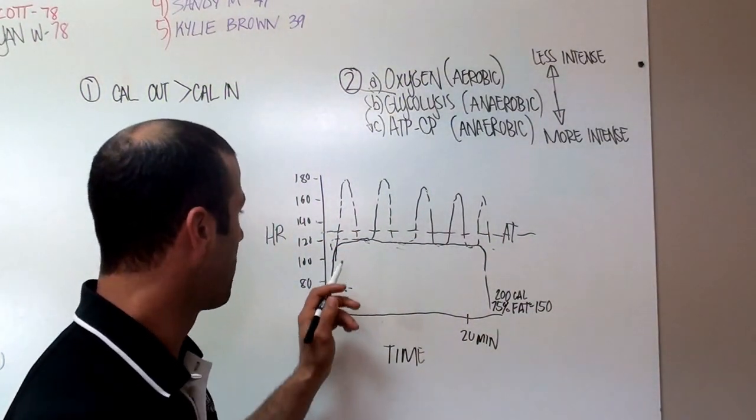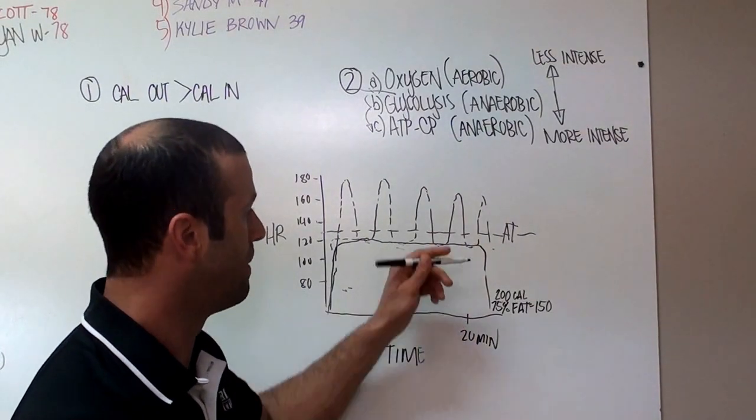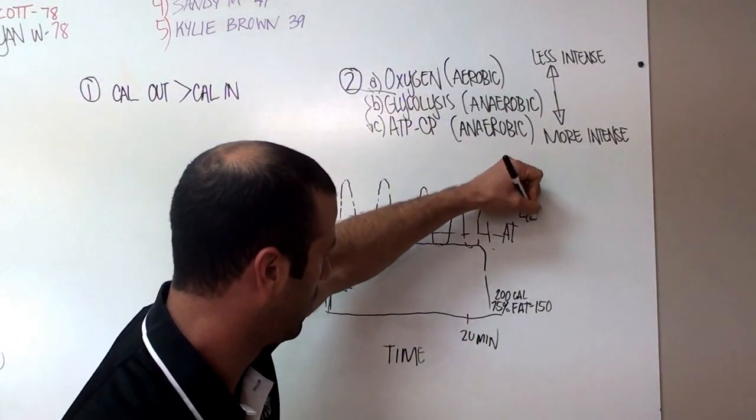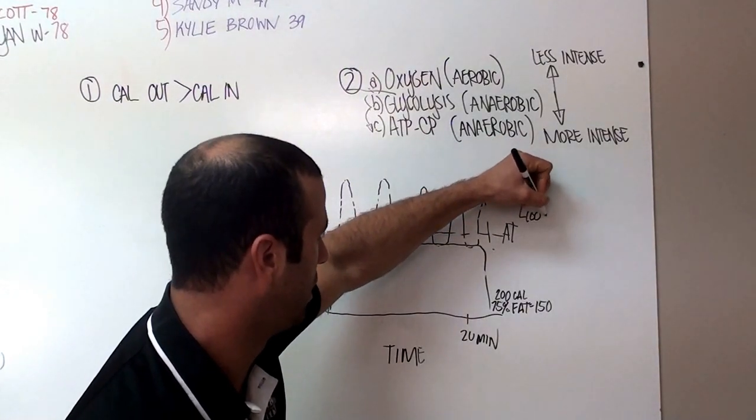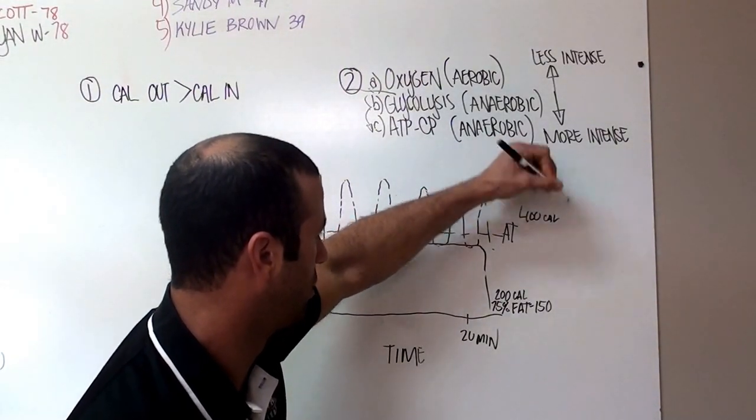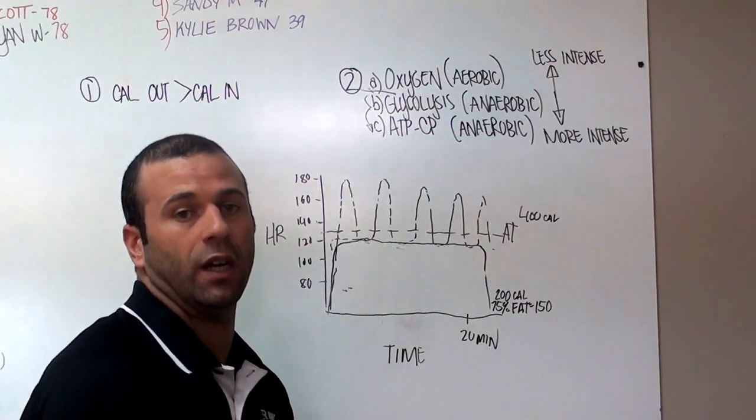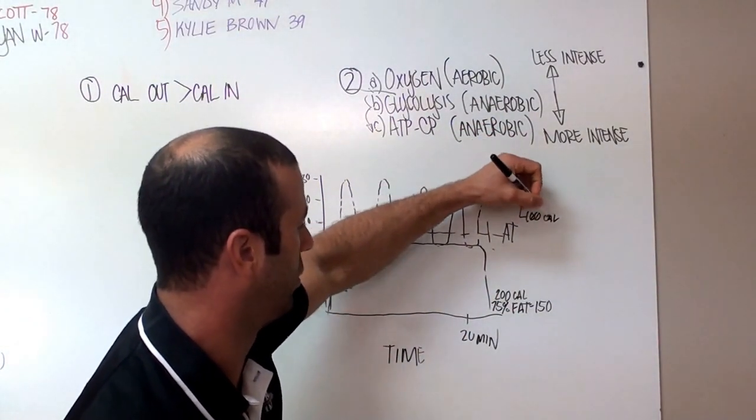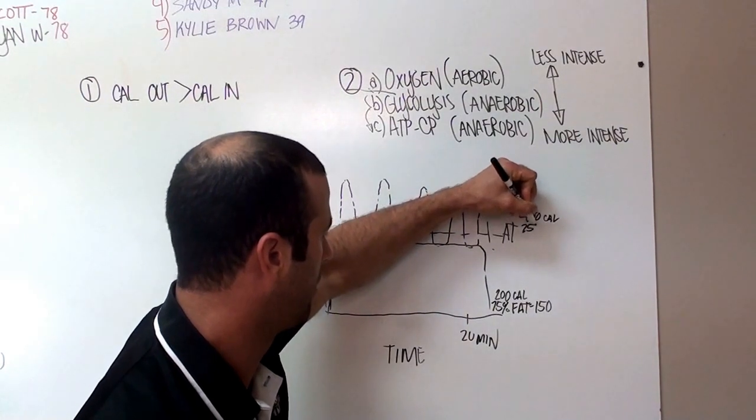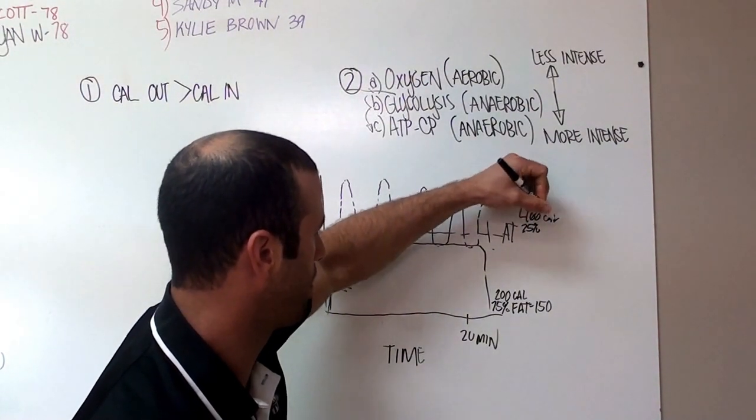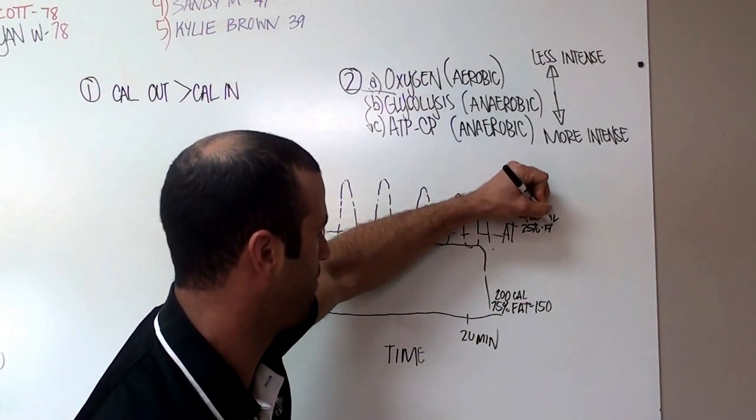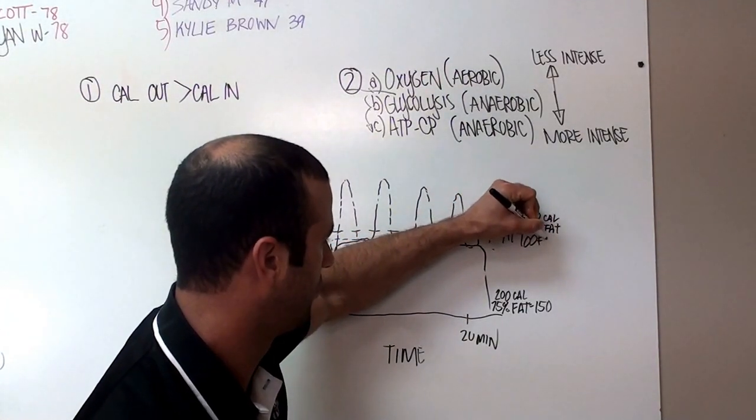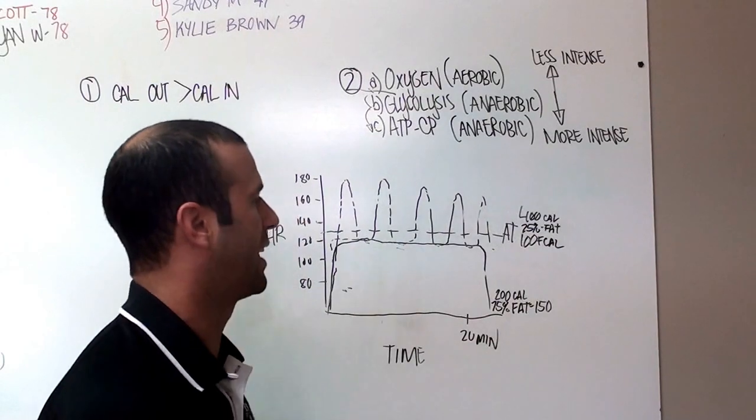Now here's what happens. Over the course of Jimmy's 20 minutes, he has burned 400 calories. Let's say 25% of them are from fat. I know I'm probably shooting a little low here. 25% from fat. So, he's burned 100 fat calories.